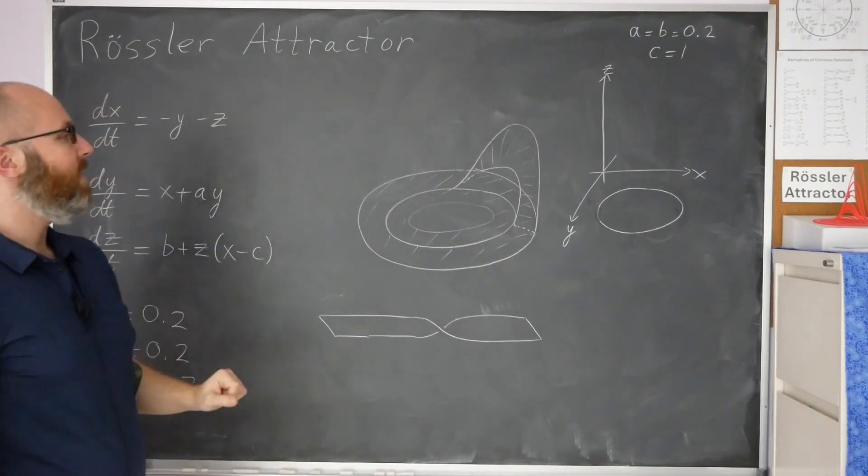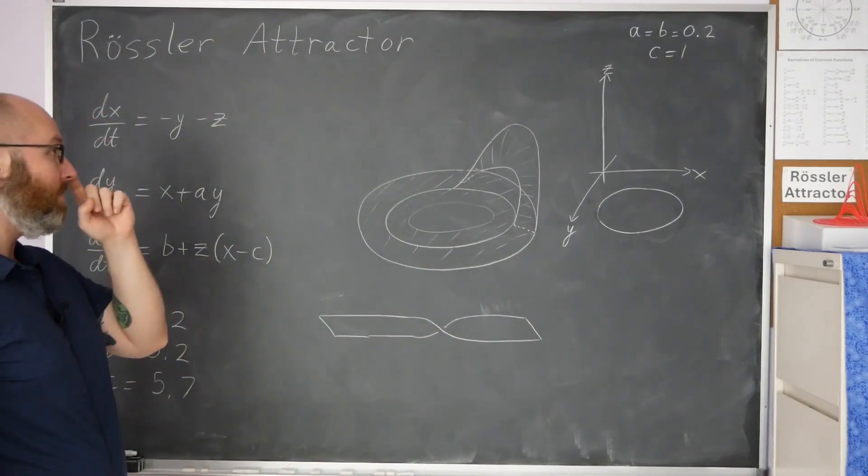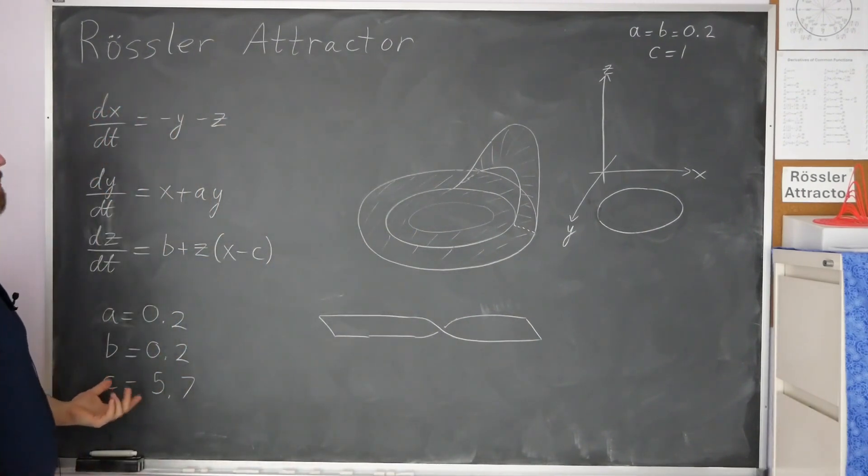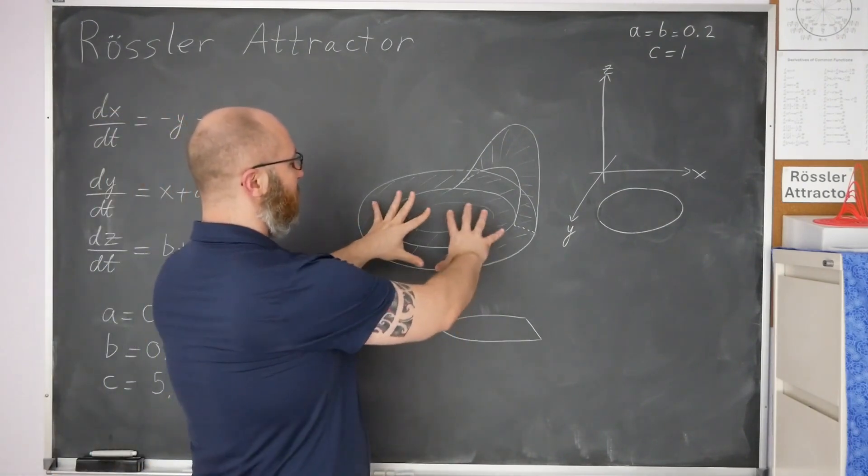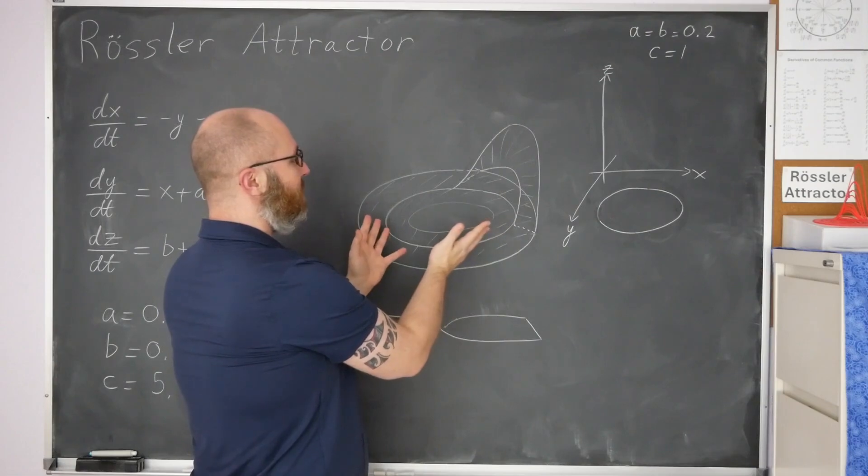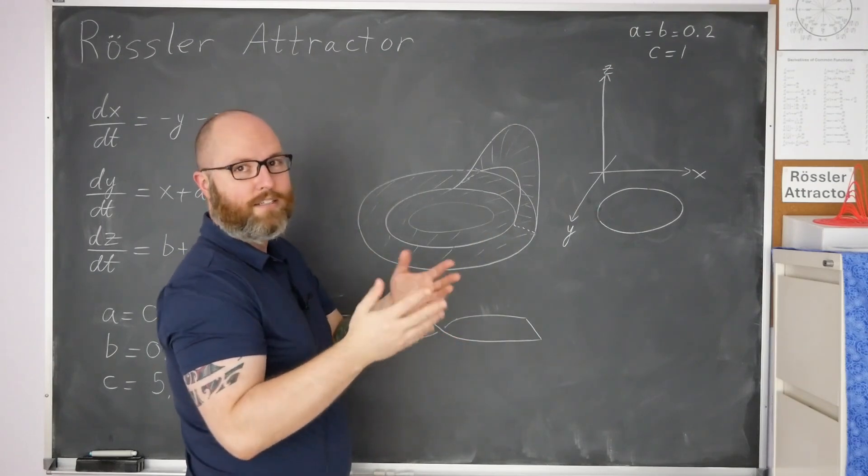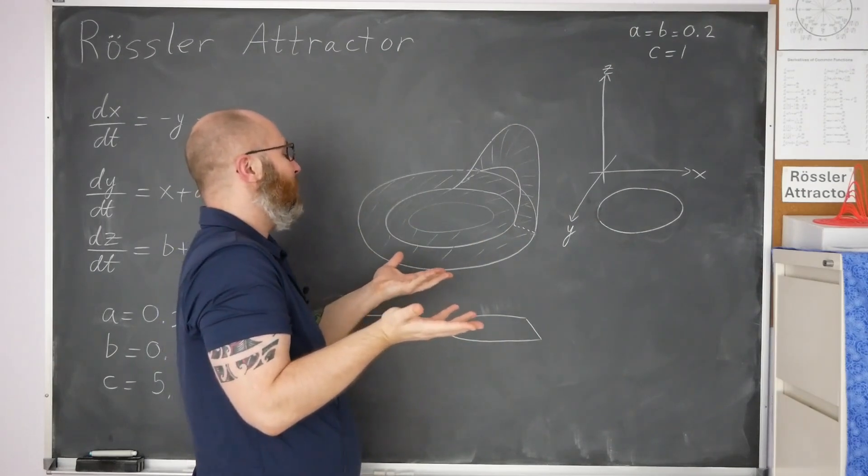The way that these are formed is it actually has to do with how that limit cycle changes as you vary the parameter c from 1 to 5.7. So this strange attractor, it's almost like a limit cycle that's infinitely long and ends up filling a two-dimensional shape.